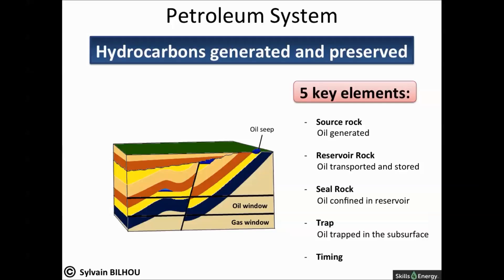Five key elements are necessary in a petroleum system. First, a source rock, which is the rock where hydrocarbons are generated. Second, a reservoir rock, which is a porous and permeable rock where the oil or gas will migrate. The hydrocarbons tend to go up as they are less dense than the surrounding formation water.